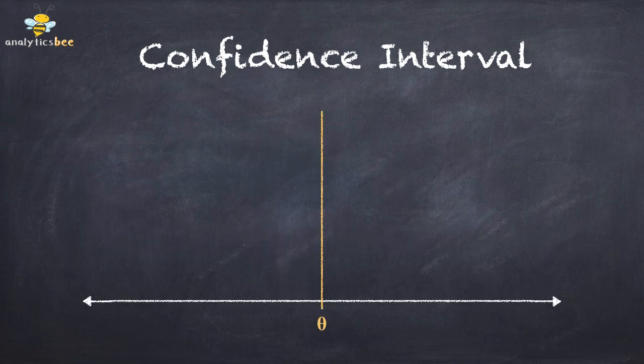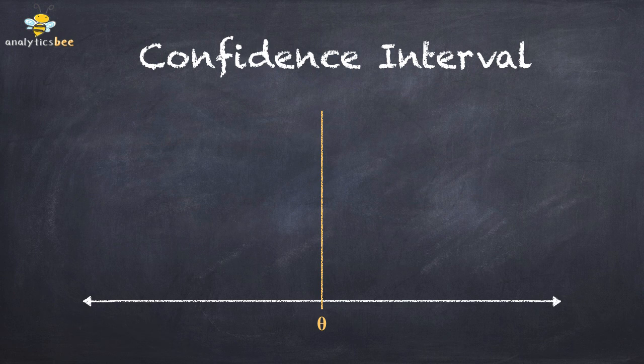The yellow vertical line represents the true value of the population parameter, theta. We can plot the interval estimates as line segments in this chart.